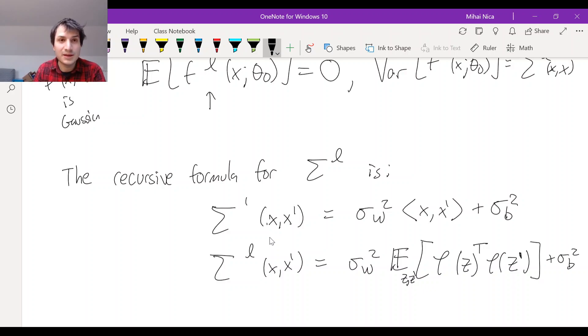Okay, so sigma W squared and sigma B squared are those coefficients that were in front of the weights and biases. And to get from sigma L minus 1 to sigma L, you use this expected value formula that depends on the non-linearity phi of the network. So phi is the non-linearity of the neural network.